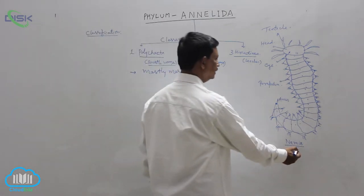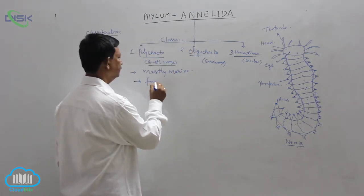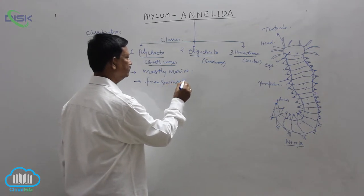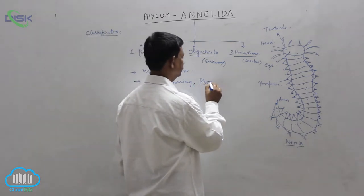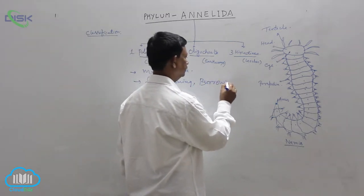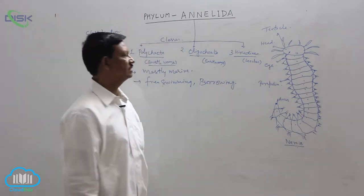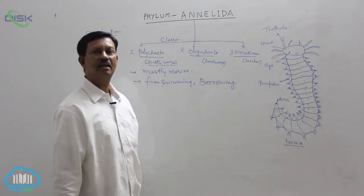Example is the Nereis. They are free living or free swimming animals and burrowing animals. They burrow in the sand in the marine water. Hence, they are also known as burrowing animals.